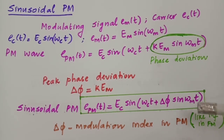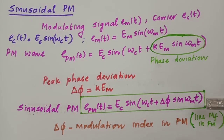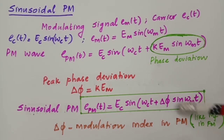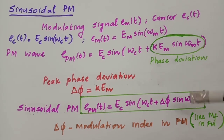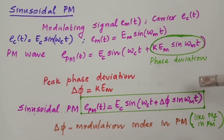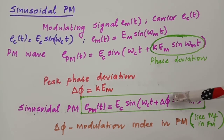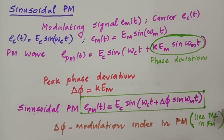In phase modulation, you will have a number of sidebands just like in FM, and the number of sidebands depends on the modulation index. From the Bessel's table, to find the strength and magnitude of the sidebands, you use the same table where different values of M_F (the FM modulation index) correspond to different numbers of sidebands with significant amplitudes. Here Δφ plays the same role as M_F, so the value of Δφ determines the number of sidebands with significant amplitudes — it is exactly the same relationship.